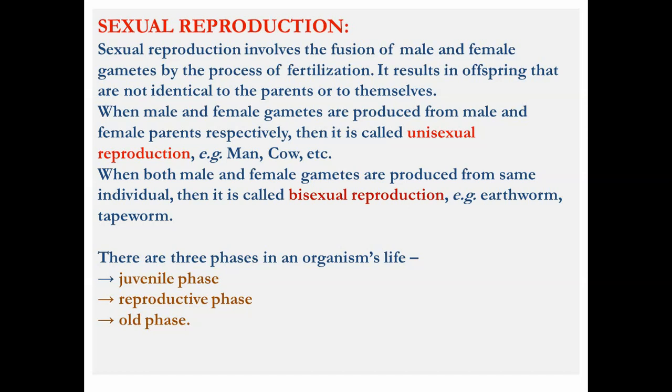When male and female gametes are produced from separate male and female parents respectively, it is called unisexual reproduction — for example, man, cow, and all mammals. When both male and female gametes are produced from a single individual, it is called bisexual reproduction — for example, earthworm. We will discuss this in detail later.